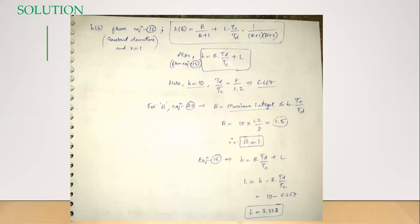To get capital B, the formula is the maximum integer less than or equal to the product of b and TC by TD. B is the buffer storage capacity. We are calculating for 10, so 10 into TC by TD. We already know ideal cycle time and downtime: 1.2 by 8 yields 1.5. The maximum integer less than or equal to 1.5 is one, so capital B equals one.